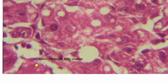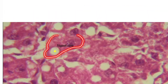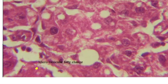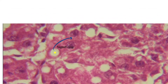Here you can see this cell has a small droplet of fat deposited - this is called microvesicular fatty change. But here in this cell, there is a big portion of fat, and this is called macrovesicular fatty change, because of the larger size.